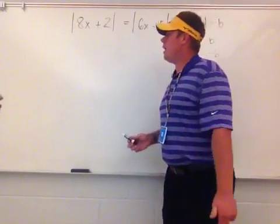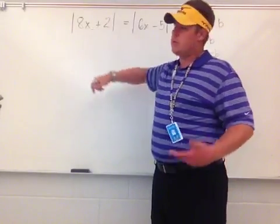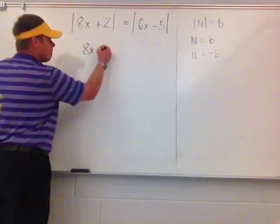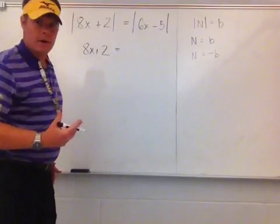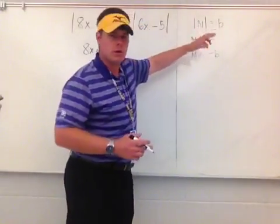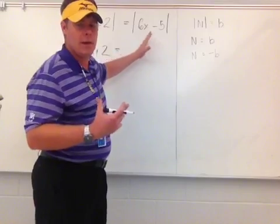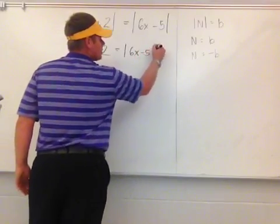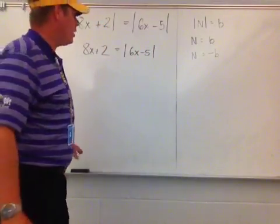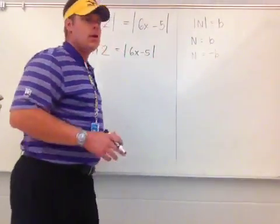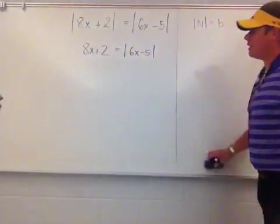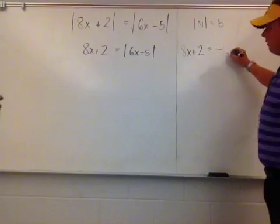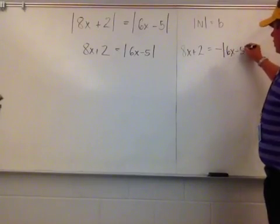What we need to do is take what's inside the absolute value, which is 8x plus 2, and set it equal to whatever the opposite expression was. It doesn't matter that it's an absolute value — it's whatever this is. So I'm setting it equal to the absolute value of 6x minus 5. I also then need to do it again to the opposite of that. So I go: 8x plus 2 is equivalent to the negative — the opposite — of the absolute value of 6x minus 5.